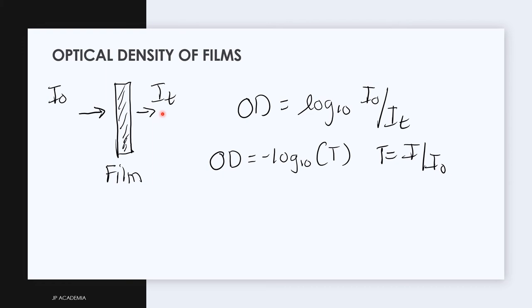We define now the optical density of film, which is OD. This is defined as the logarithm base 10 of I₀ over It. Optical density is also the negative of the logarithm base 10 of the transmittance T of the film.